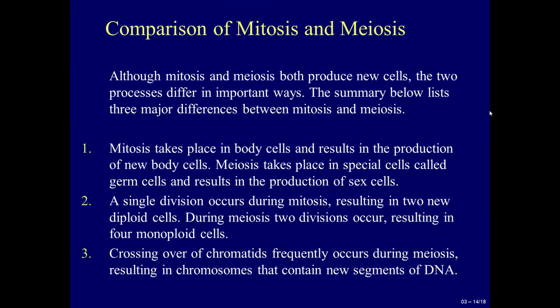Comparison of mitosis and meiosis: although both produce new cells, the two processes differ in important ways. First, mitosis takes place in body cells and results in new body cells; meiosis takes place in germ cells and results in sex cells. Second, a single division occurs during mitosis resulting in two new diploid cells; during meiosis, two divisions occur resulting in four monoploid cells. Third, crossing over of chromatids frequently occurs during meiosis, resulting in chromosomes that contain new segments of DNA.